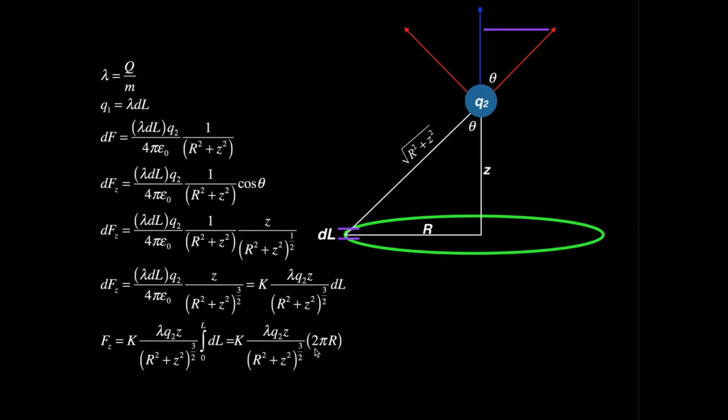If you knew the values of all these quantities, you would just plug them in to get the force of the ring of charge on Q2. Hopefully this video gave you some intuition on how to do this kind of calculation. It's not as simple as just applying Coulomb's law because we don't have a point charge — we have a ring of charge, a charge distribution, so we're forced to do an integral. Please make sure to like this video and subscribe to the channel. Thank you very much.